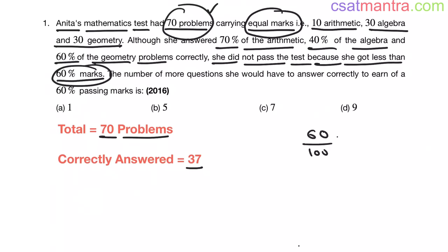So 60% of total number of questions, that is 70. Zeros cancel, 6 into 7 is 42. So she has to attempt 42 questions correctly to get 60% passing marks, my friends.